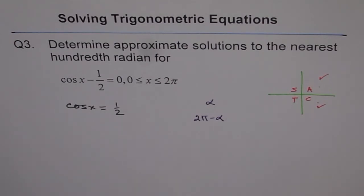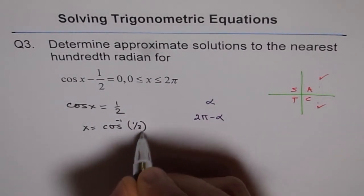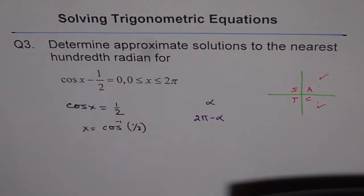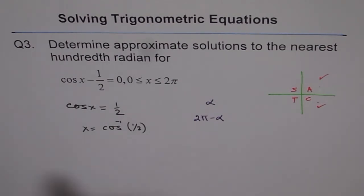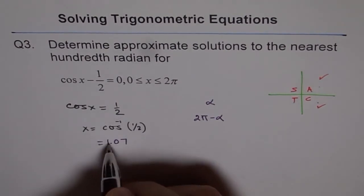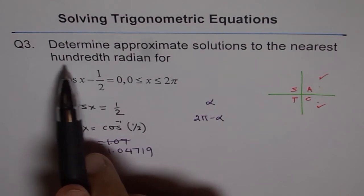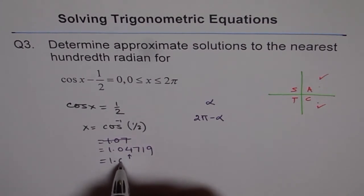Let's use a calculator and find what x is. x equals cos inverse of half. Remember to change the mode of the calculator so that you get your answer in radians. Cos inverse of 0.5 gives us 1.04719, which we round to the nearest hundredth as approximately 1.05.